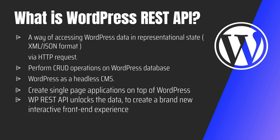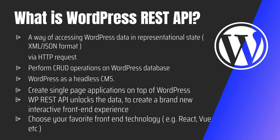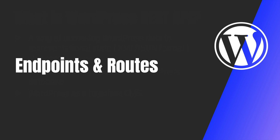WordPress REST API unlocks the data to create a brand new interactive front end experience. For example, if you want to create some search experience for the user or some filters where you don't want the page to be refreshed, you can use either Ajax or the WordPress REST API to fetch the data based on different parameters the user has selected, and then manipulate the DOM using JavaScript to show that content without reloading the page.